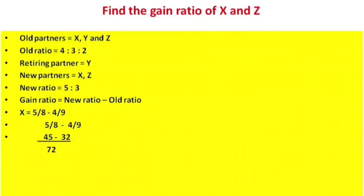Calculating: LCM of 8 and 9 is 72. So 5/8 becomes 45/72, and 4/9 becomes 32/72. Therefore 45 minus 32 equals 13 by 72. X's gain ratio is 13 by 72. Y's gain ratio: 3/8 minus 2/9.